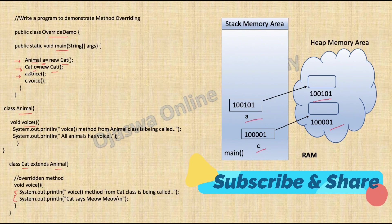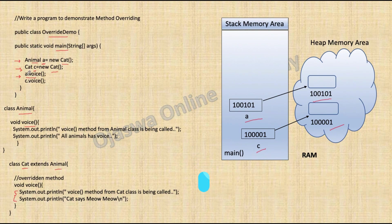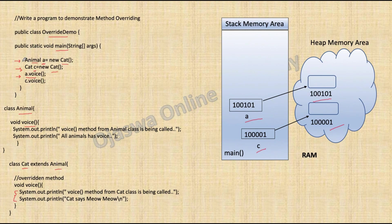The next statement is a.voice. There are two things to understand when this statement executes. Reference variable a has an object of type Cat, but reference variable a is of type Animal. At compile time, the compiler will check whether the method voice is present in Animal class as well as Cat class having the exact signature. If it is not present in both the classes, you get a compile-time error.